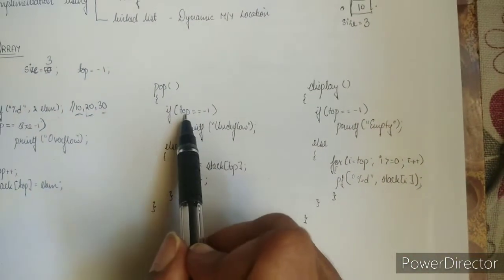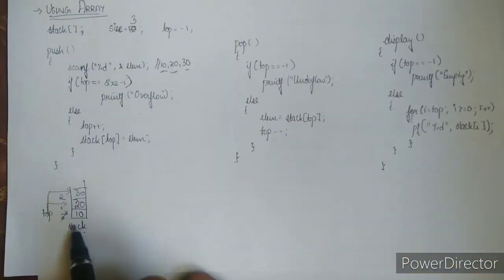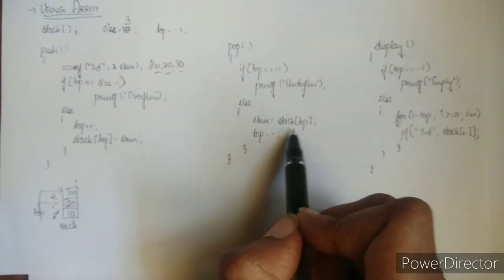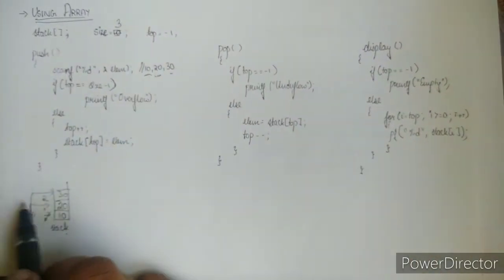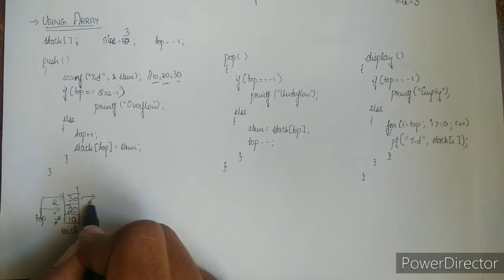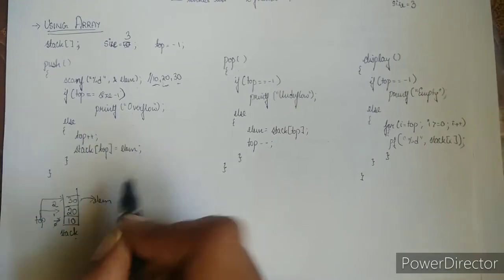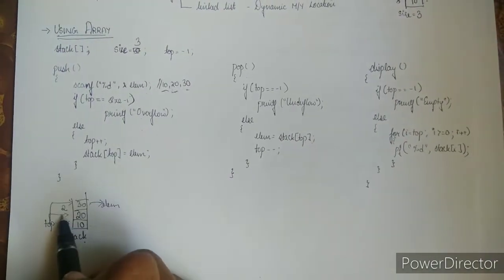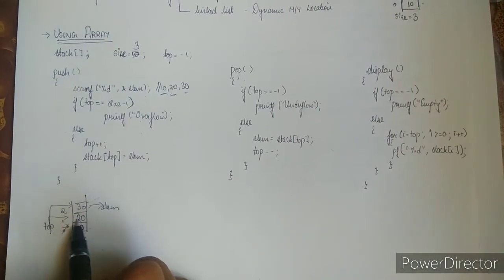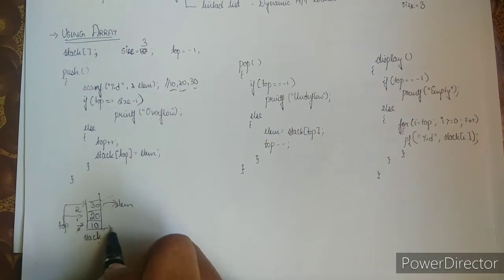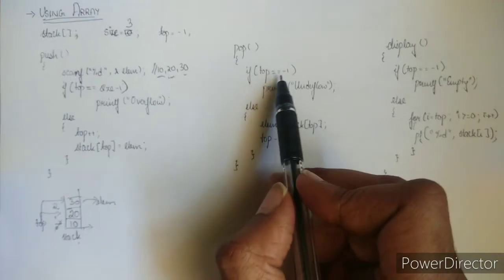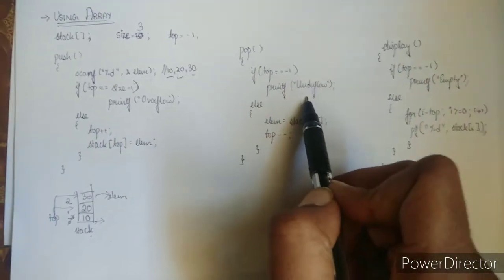Now pop. If top equals minus 1, we print underflow. In our example, top is not minus 1, so we go to else: element = stack[top], which is 30. Then top-- decrements top and that element is deleted. You repeat this until element 10 is deleted. After 10 is deleted, top will be at minus 1, and if top is minus 1 that means the stack is empty — attempting to pop again would be underflow.